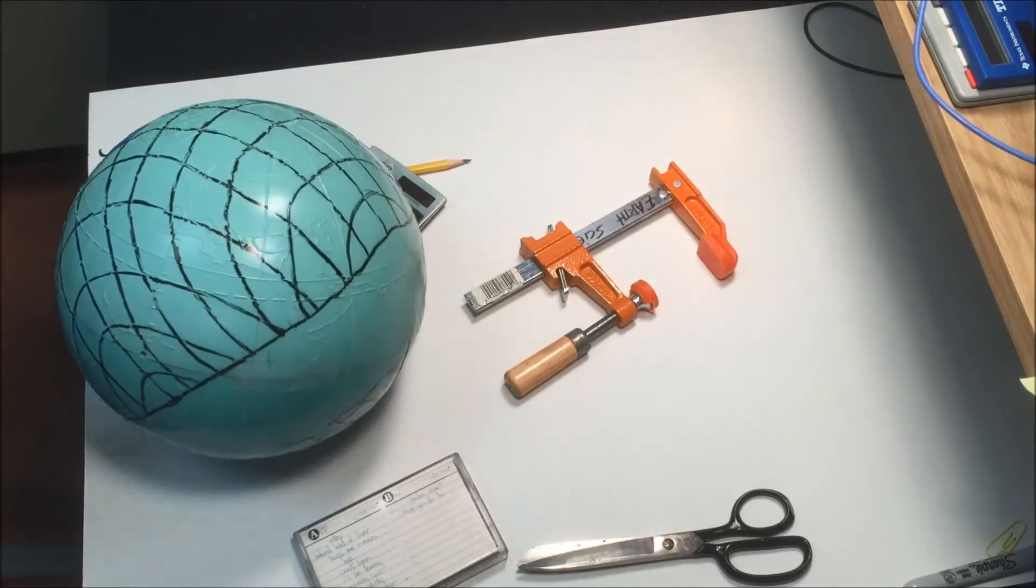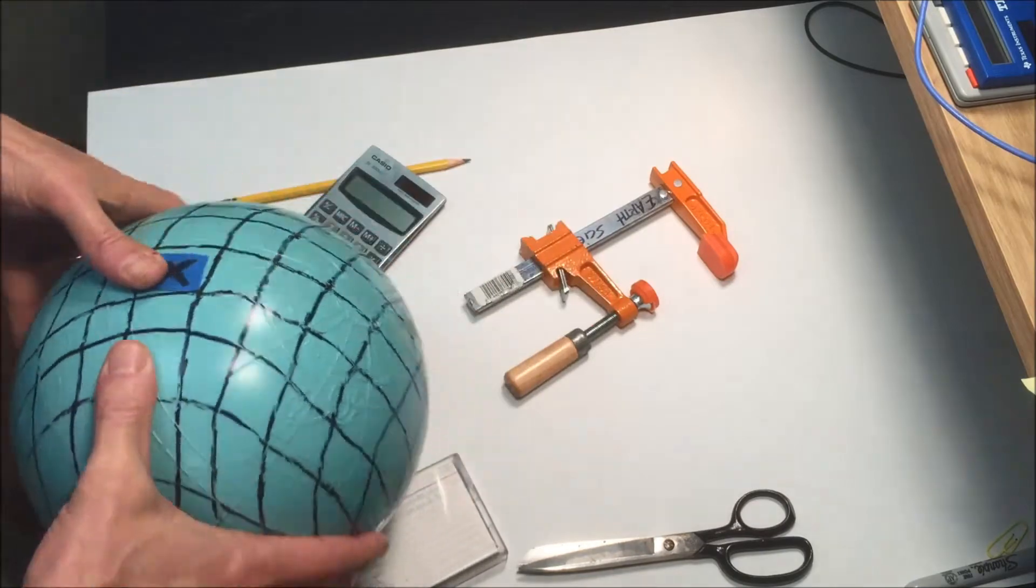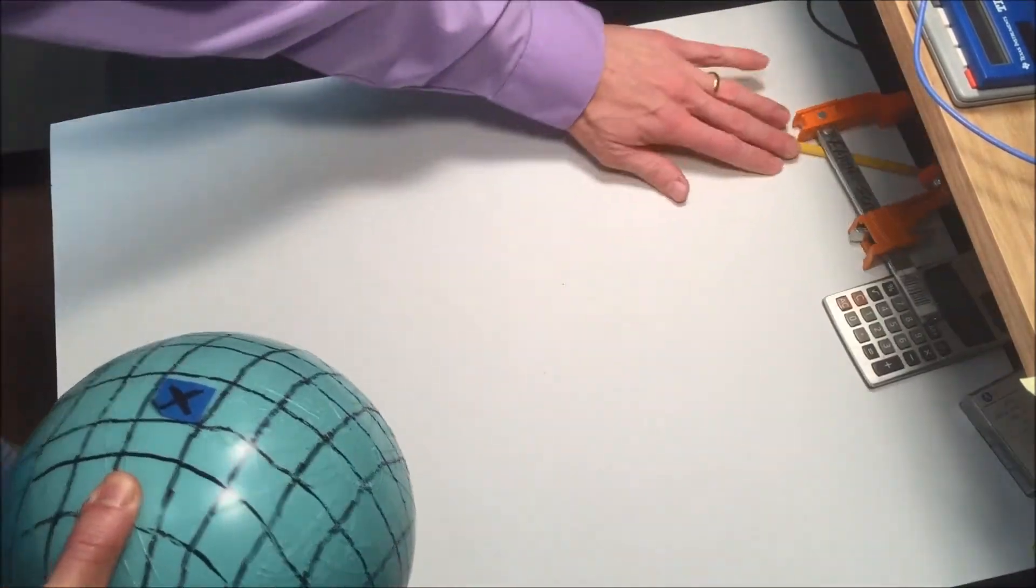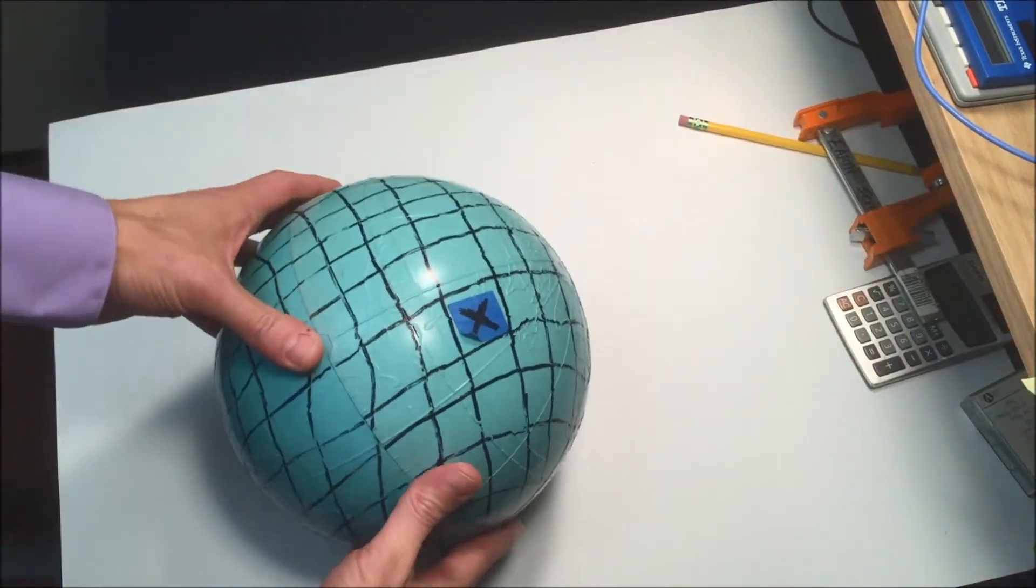Alright, let's start with the P wave shadow zone. So here I have an actual globe. Okay, and what I did here is the X will represent the focus of this particular earthquake.